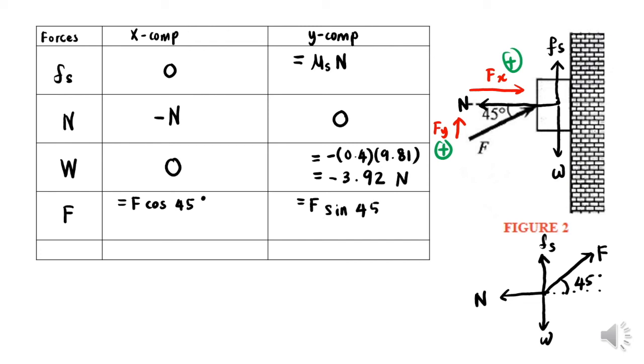Our F net equals zero for both x and y components since we want the object to be in equilibrium or stationary.